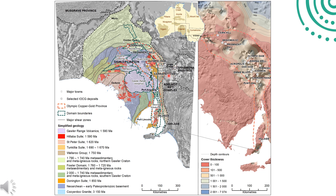The figure to the right displays cover thickness and shows that most of the big South Australian IOCGs occur beneath hundreds of metres of younger cover, with no surface expression of the mineralisation below. These deposits have mineralisation from several hundred to well over 1,000 metres depth, and in some cases exploration drill holes bottom out in high-grade mineralisation.